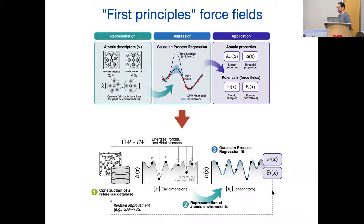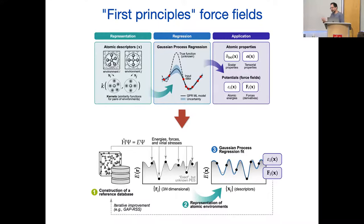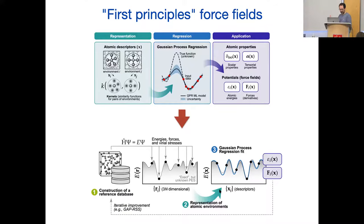You compute energies, forces, and maybe the observables you're interested in. The first time you do this they may not be accurate enough because you haven't collected enough data. But you can go back, generate more data — how you make sure your data is relevant is the bread and butter of machine learning. You run around this circle a couple of times until you get the desired result. Our experiences are empirical: typically we run around this circle at most 10 times, and things converge really quite well.